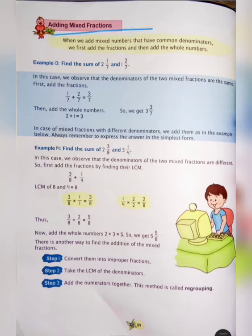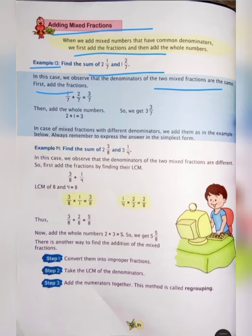When we add mixed numbers that have common denominators, we first add the fractions and then add the whole numbers. Example 13: find the sum of 2 and 1 upon 7, and 1 and 2 upon 7. We observe that the denominators of the two mixed fractions are the same. First add the fractions: 1 upon 7 plus 2 upon 7 is equal to 3 upon 7.